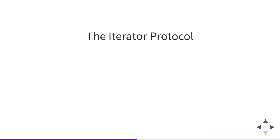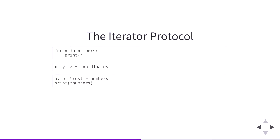These facts about iterators are part of something called the iterator protocol. This is the thing that powers all iteration in Python. For loops rely on iterators and the iterator protocol. Tuple unpacking works the same way as a for loop. Star expressions also rely on the iterator protocol. Many built-in functions, standard library functions, and third-party library functions rely on the iterator protocol. Anything that involves some form of looping uses iterators in Python.